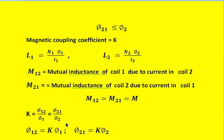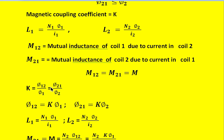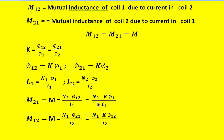The magnetic coupling coefficient k is defined as phi12 divided by phi1, which is also equal to phi21 divided by phi2. From this, phi12 can be written as k times phi1, and phi21 can be written as k times phi2. The mutual inductance M21, which equals M, is equal to N2 times phi12 divided by I1. Substituting phi12 with k times phi1, the equation becomes M21 equals N2 times k times phi1 divided by I1.